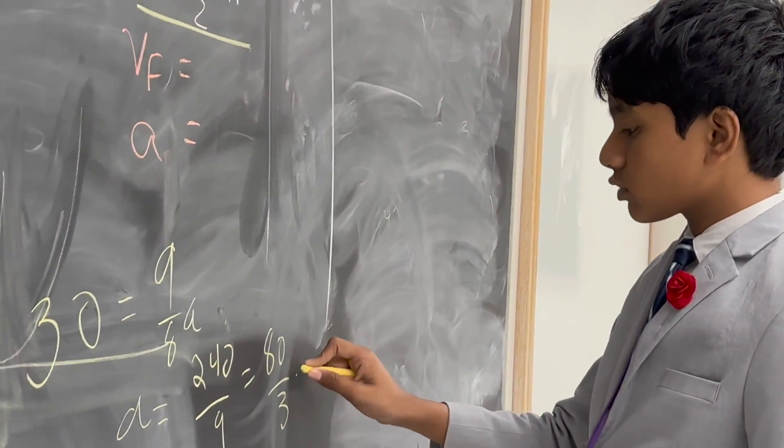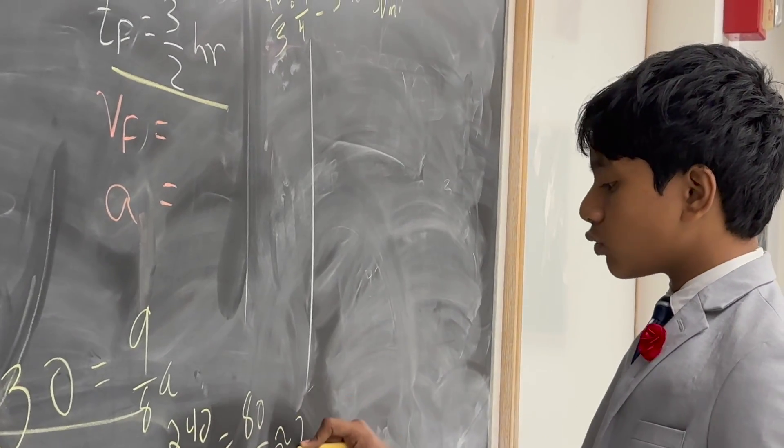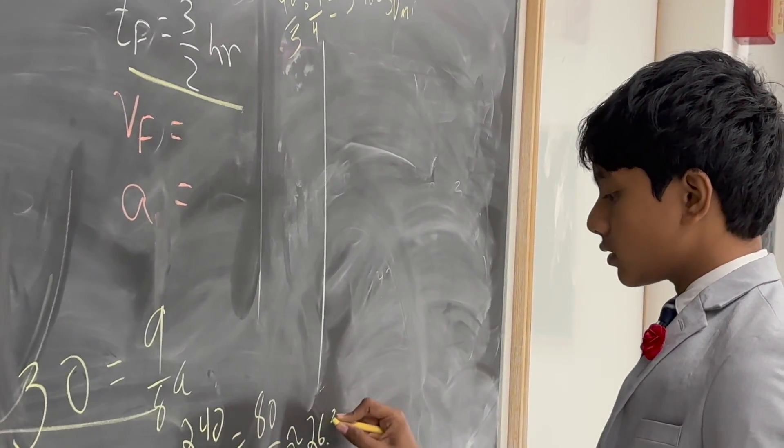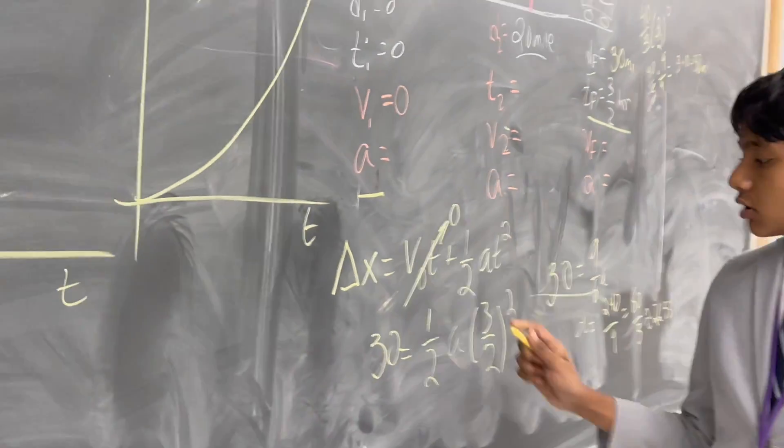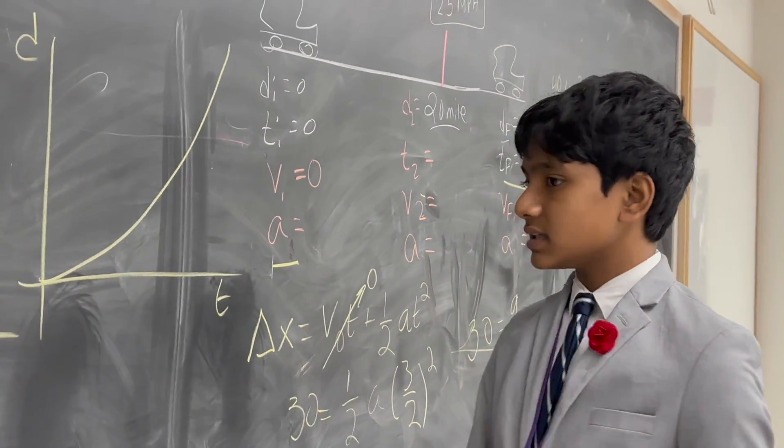So, we get 80 over 3, which is about 26.33. All right. Good. So, now, we know the acceleration.